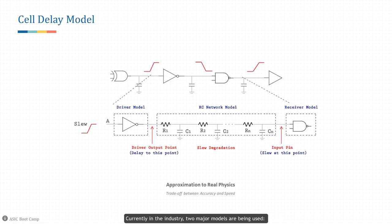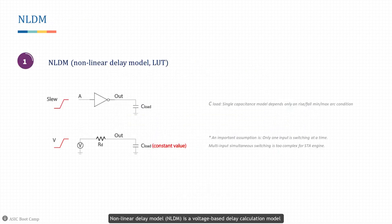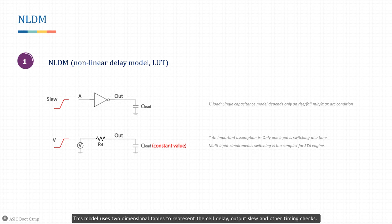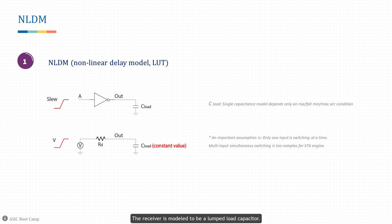Currently in the industry two major models are being used. The nonlinear delay model (NLDM) is a voltage-based delay calculation model widely used to represent the response characteristics of cells in libraries. It is very simple and less time-consuming for tools to obtain the response of cells. This model uses two-dimensional tables to represent cell delay, output slew, and other timing checks. In this method the driver cell is modeled as a Thevenin voltage source with resistance in series, and the receiver is modeled as a lumped load capacitor.